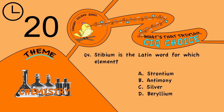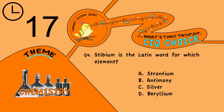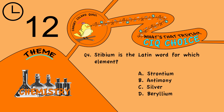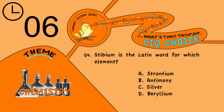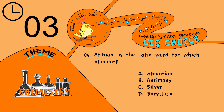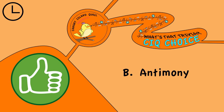Question 4. Stibium is the Latin word for which element? Is it A, strontium; B, antimony; C, silver; or D, beryllium? The answer is B, antimony.